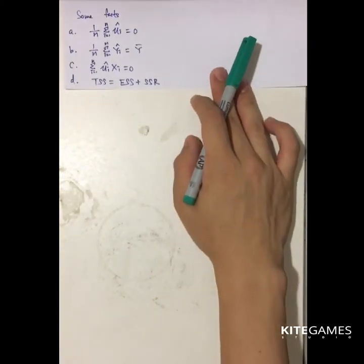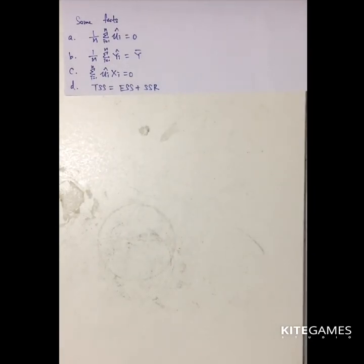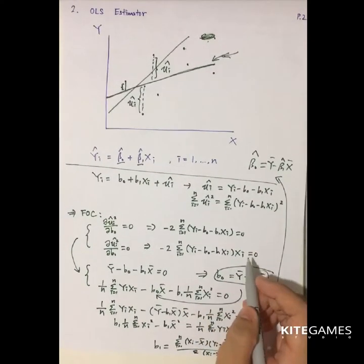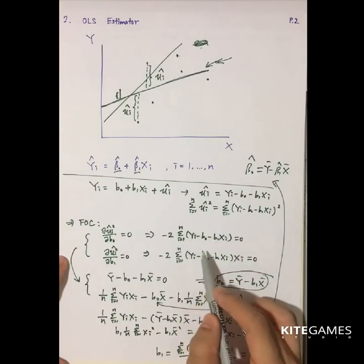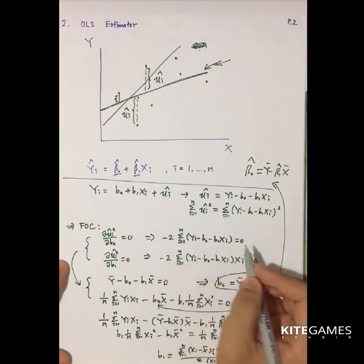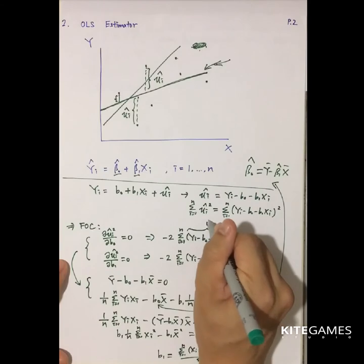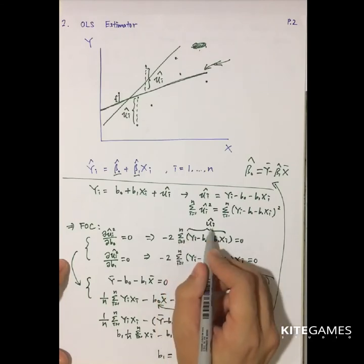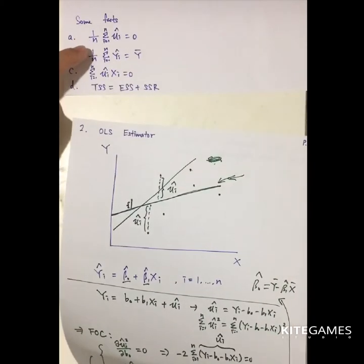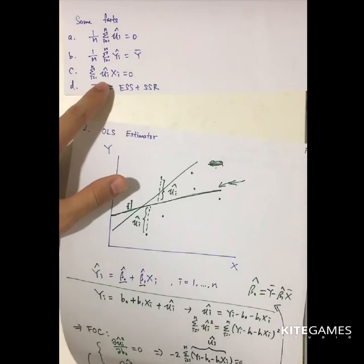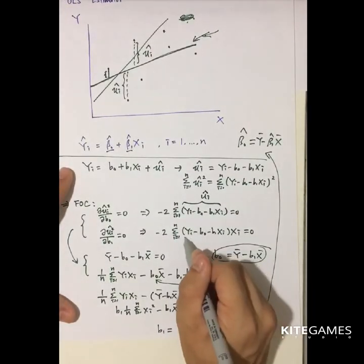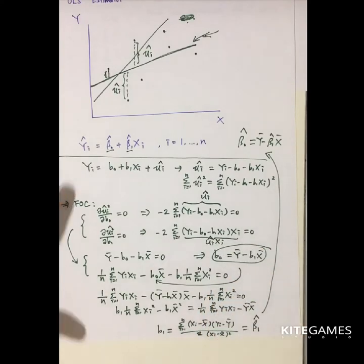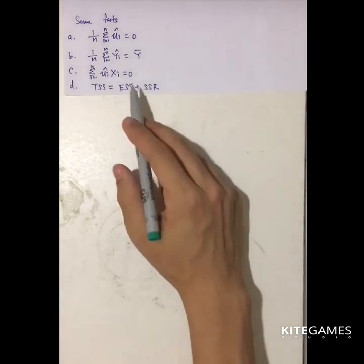The first fact — that the sum of ui hat divided by n equals 0 — is automatically derived by the first-order condition. In OLS, we assume yi minus B0 minus B1xi (which is actually ui hat) satisfies the first-order condition, so the sum of ui hat equals 0. Fact a is automatically proved. Similarly, fact c — that the sum of ui hat times xi equals 0 — is derived from the second first-order condition, so this is also automatically equal to 0.